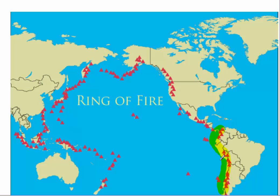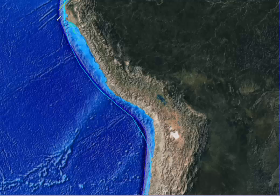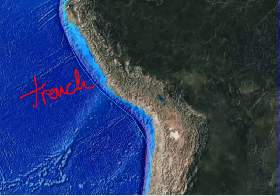Let's look at the region around South America in more detail. The first thing we find along the coast of South America is a deep ocean trench, just like we talked about with the Marianas Trench. We find the same thing along the western coast of South America.